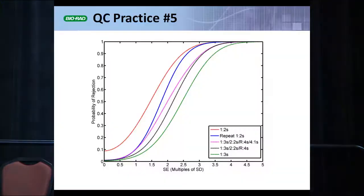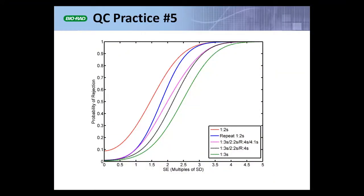We published a paper in ClinChem last year, 2012, on this topic. This is a figure close to one that appeared in that manuscript. It shows power functions. The x-axis denotes the state of the process — different magnitudes of out-of-control conditions, given in multiples of standard deviation. The y-axis is the probability of QC rule rejection, and each curve represents a different QC rule.